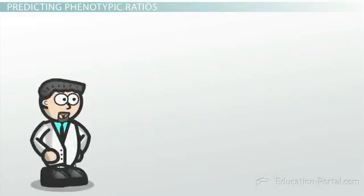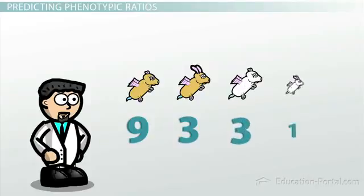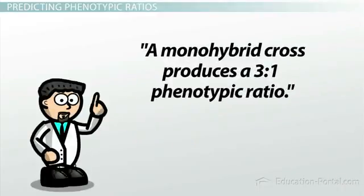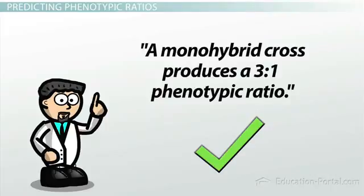By applying Mendel's Law of Inheritance, we've been able to help Adrian explain the unusual 9 to 3 to 3 to 1 ratio of phenotypes he observed in his experiment. This means that the conclusions that we drew from our first experiment, that a monohybrid cross produces a 3 to 1 phenotypic ratio, is still correct. Furthermore, our second flying hamster experiment helped us understand chromosome segregation even better.